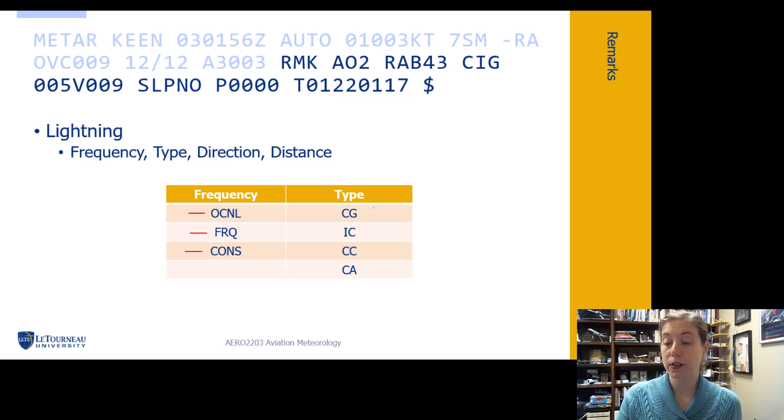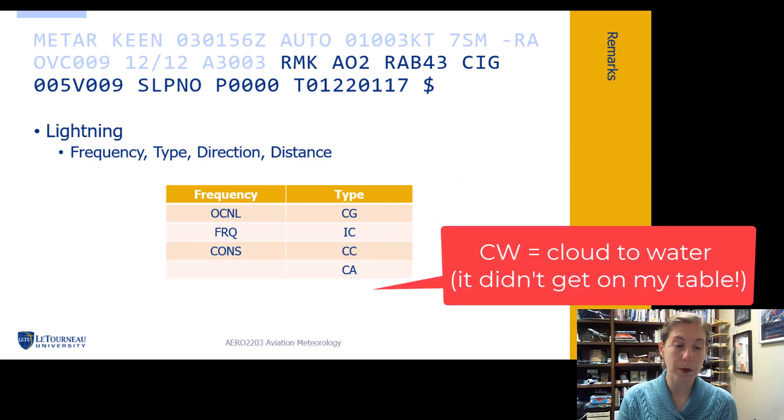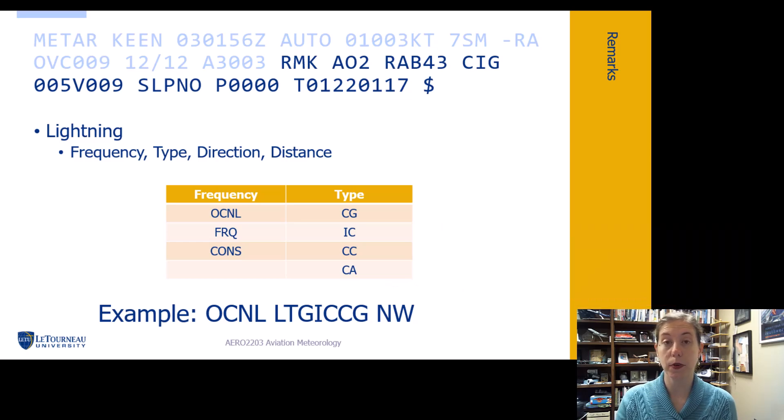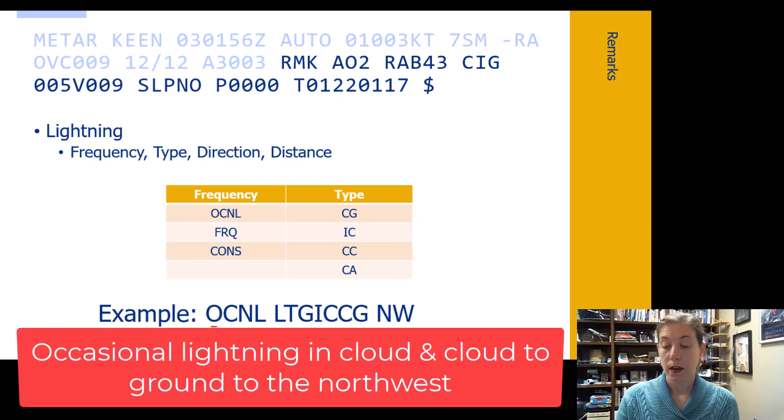Types again are fairly easy to understand. Once you know what we're talking about you can generally figure them out. Cloud to ground. So anything that's C is going to be cloud. So CG is cloud to ground. In cloud is IC. Cloud to cloud is CC and cloud to air is CA. So we have cloud to air. So let's look at an example here that I pulled from a METAR. Here's how they're going to code this and I'll read it for you. You can practice on these on your own. Occasional lightning, so there's our lightning group, in cloud, cloud to ground, and then where it was observed to the northwest. So that's that direction piece.